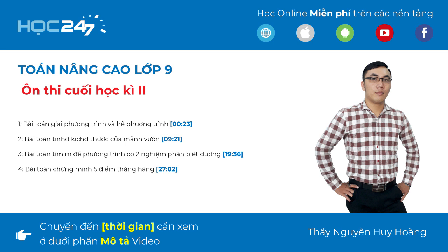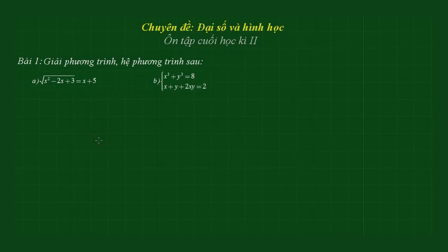Xin chào các bạn. Hôm nay chúng ta sẽ cùng nhau đi vào buổi ôn tập cuối học kỳ 2 của chương đề đại số lớp 9. Chúng ta sẽ đi vào bài tính đầu tiên - bài phương trình đầu tiên.